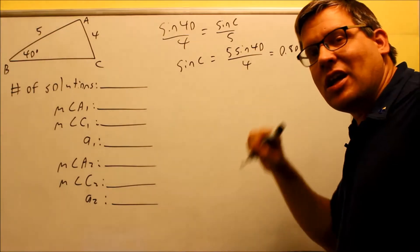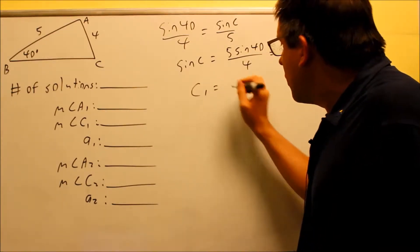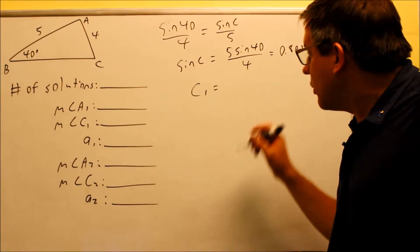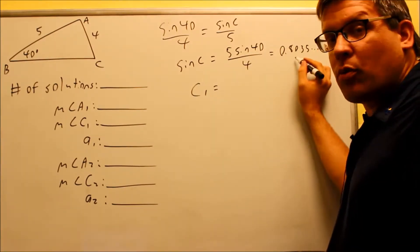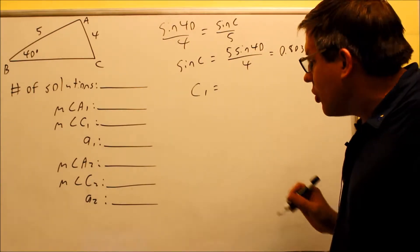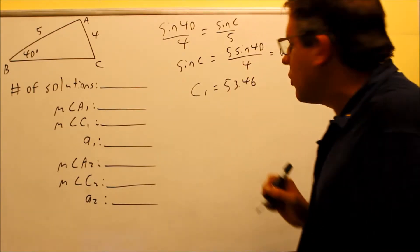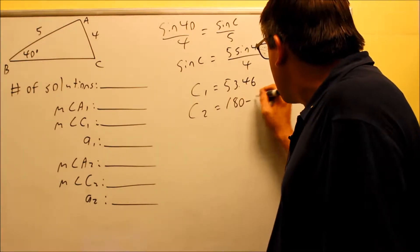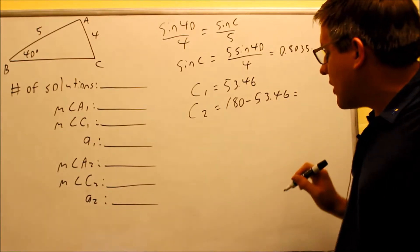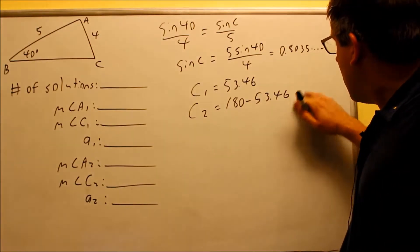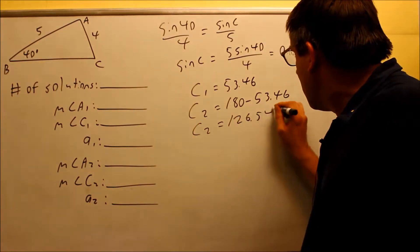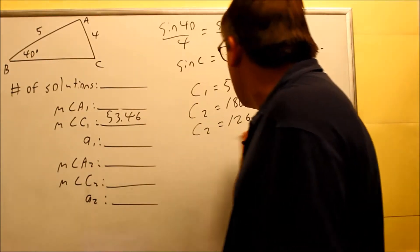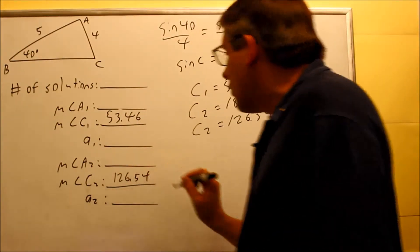We want to solve for C by taking the inverse, and remember your calculator only is going to give you one of the possible answers. It will always give you the answer in the first quadrant. If we take the inverse sine of 0.8035, you're going to get the first solution, 53.46 degrees. Remember you're always going to get a secondary solution by subtracting from 180, and that's going to give you 126.54 degrees.